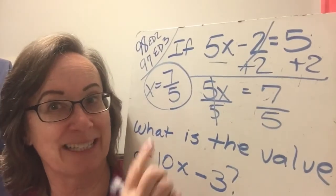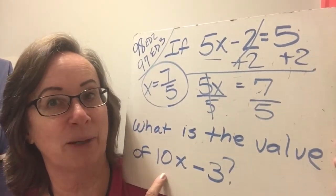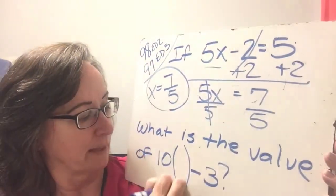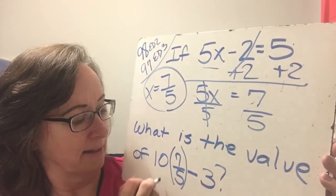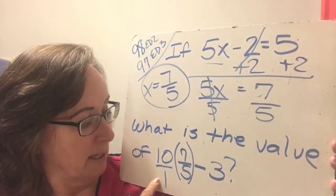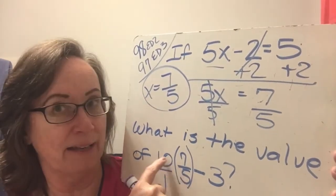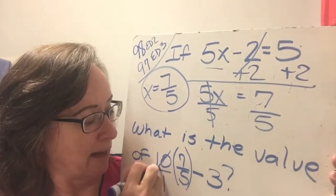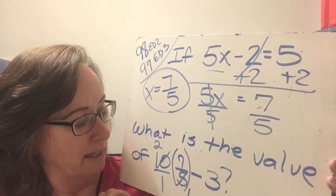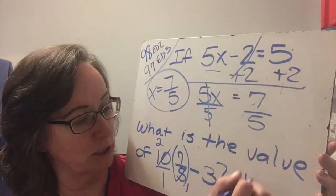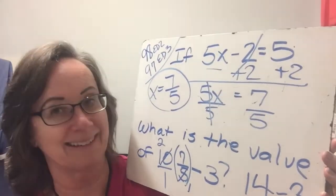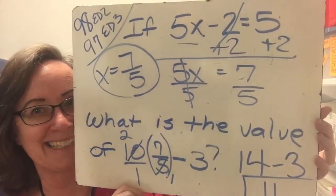So now all we have to do is take the 7 fifths and put it down here for the x. So let's take the x out, put in the 7 fifths. Remember that the 10 is on top and the 1 is on bottom. So can't we cancel the 10 and the 5? Because we can take a 5 out of the 10 leaving a 2. We can divide this by 5 leaving a 1. And we end up with 14 over 1 or just 14 minus 3 is 11. That one was pretty easy too, wasn't it?